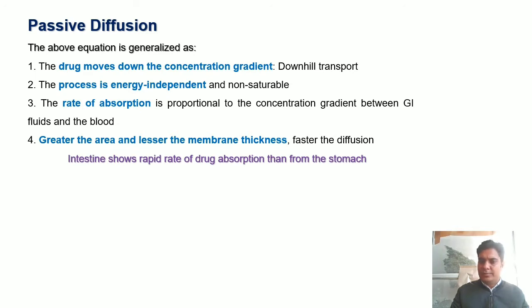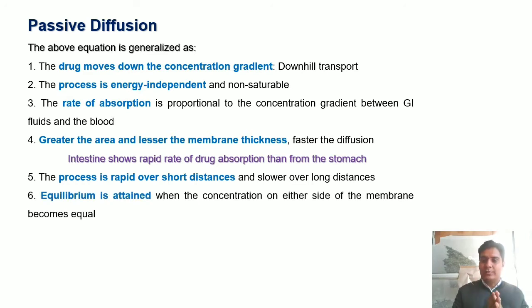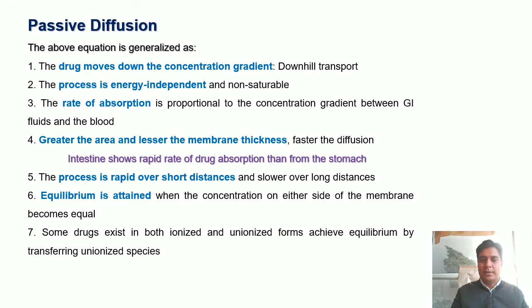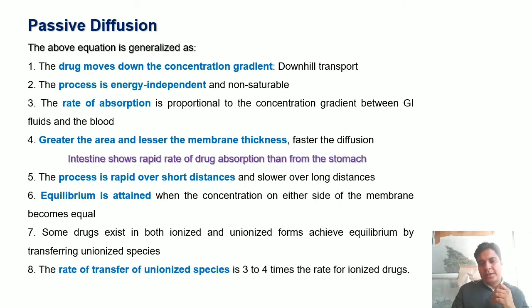The inner surface area of the intestine shows a more rapid rate of absorption than the stomach because of greater surface area. The process is rapid over short distances and slower over long distances. Equilibrium is attained when the concentration on each side of the membrane is equal, so a sink condition must be maintained. Some drugs exist in both ionized and unionized forms and achieve equilibrium by transferring the unionized species across the membrane.